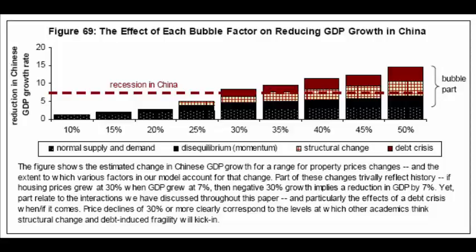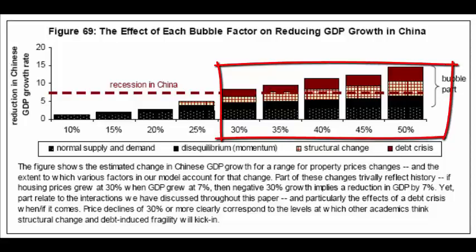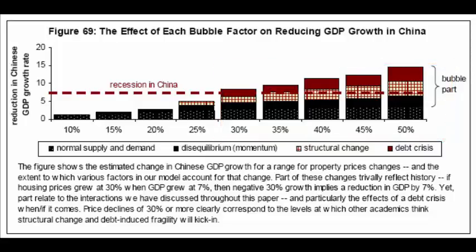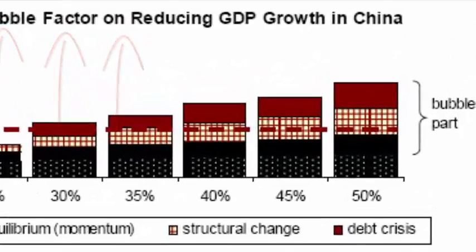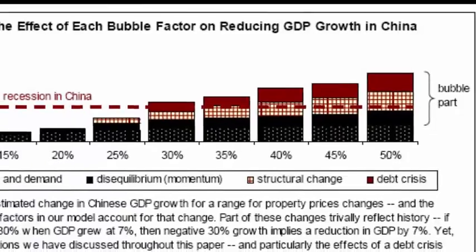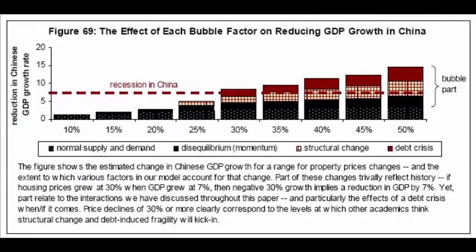If we look at even higher changes in property prices, we see that these other factors start to play a much bigger role in the Chinese economy going into a zero growth recession or even deep recession. Looking all the way from 40% to 50% price change — very rapid change in these property prices — we would see a very large role played by deep-seated structural changes. Imagine that you're a Chinese flat owner and suddenly you woke up to find that your flat was worth 40% less than it was yesterday. That would very seriously distort your savings behavior and how much money you wanted to keep on the stock market.